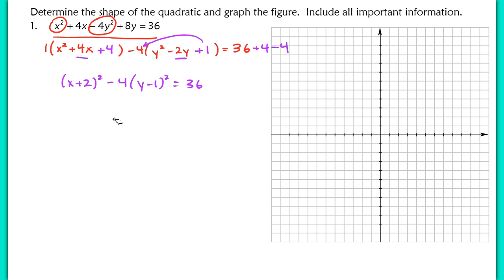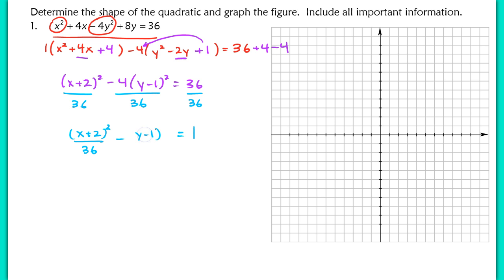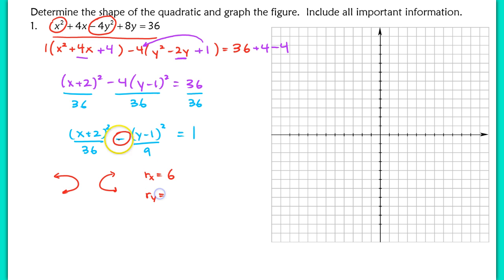We're going to put this in standard form — remember, you have to have 1 on one side. Dividing through by 36, the first term doesn't need simplification, but the second term becomes y minus 1 squared over 9, with the negative sign still out in front. This hyperbola opens left to right because the negative is in front of the y-squared term. The r sub x and r sub y are easy to spot — just take the square root of the two denominator values. Now graph this hyperbola including all important information, and practice listing all parts without being prompted.